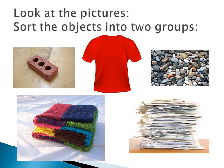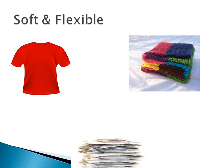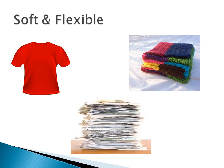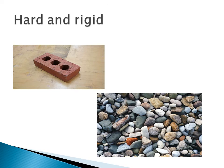The pebble is hard, but not heavy — it's tiny and light, and smooth also. The scarf is soft. The paper is smooth and also flexible. So the soft and flexible group includes the shirt, the scarf, and the paper. And the hard group includes the brick and the pebbles. Yes, we put them into two groups.